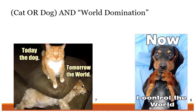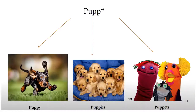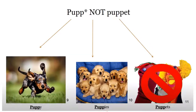You can also put an asterisk after a portion of a word to look for various endings — we call this truncation. For example, truncating the word 'pupp*' will find various endings such as puppy, puppies, and puppets. Since we are looking for resources on dogs, we do not want articles on puppets, so we can eliminate those from our search by adding NOT puppets.